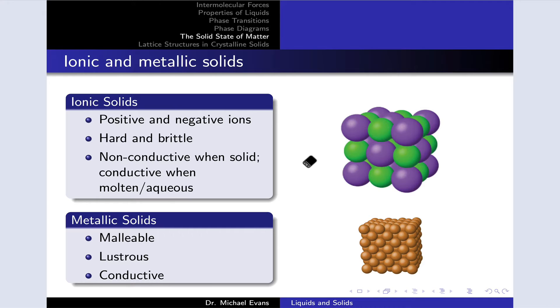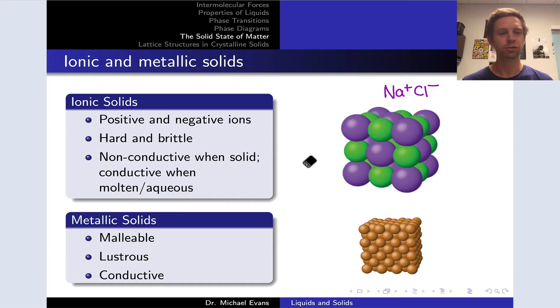They consist of positive and negative ions in a regular lattice. An example of an ionic solid is sodium chloride, Na+ Cl-. Ionic solids tend to be relatively hard and brittle and difficult to break or crack, and if you've ever tried to do this with a large crystal of sodium chloride, you know this intuitively.